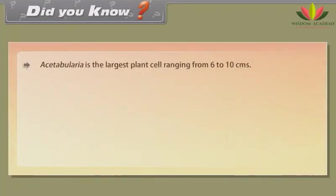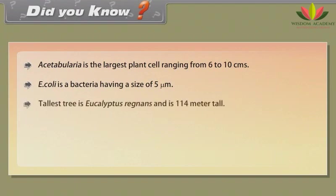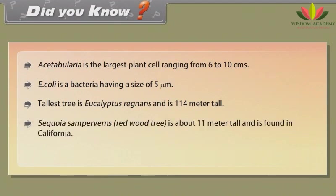Did you know? Acetabularia is the largest plant cell, ranging from 6 to 10 cm. E. coli is a bacteria having a size of 5 micrometers. The tallest tree is Eucalyptus regnans and is 114 meters tall. Sequoia sempervirens, a redwood tree, is about 11 meters in diameter and is found in California. The elephant is the largest land animal.